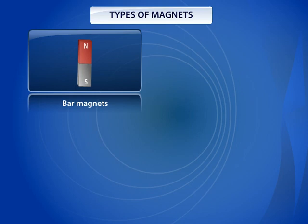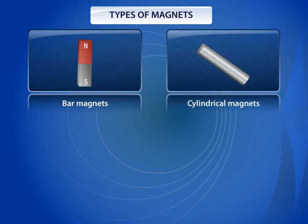Cylindrical Magnets: In these magnets, the poles are located at the two circular ends of the cylinder.